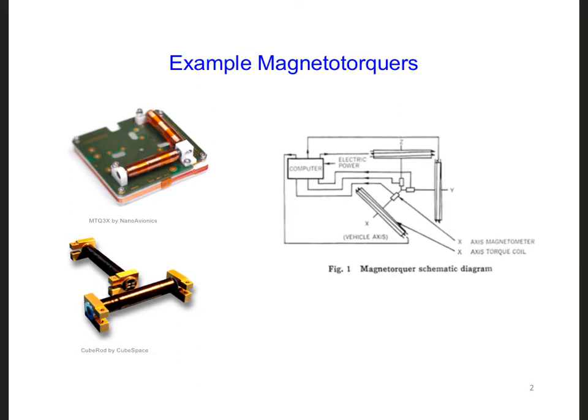But wait! Any conductor has free electrons in it, and our satellite has lots of metal in it, or on it. The exterior of a satellite is typically made out of metal to help shield the internal electronics from the solar wind, for example.